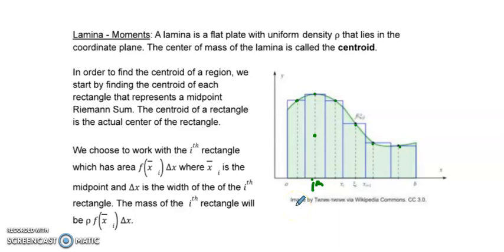So we choose to work with the ith rectangle. And that ith rectangle is going to have height of f of x sub i up here, and it's going to have an x value down here of x sub i. And then the width of the rectangle, this piece right here, is going to be delta x.